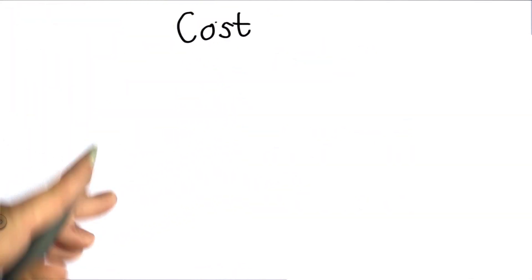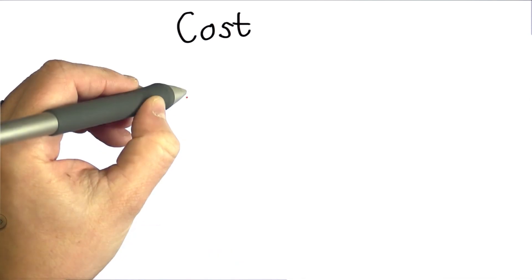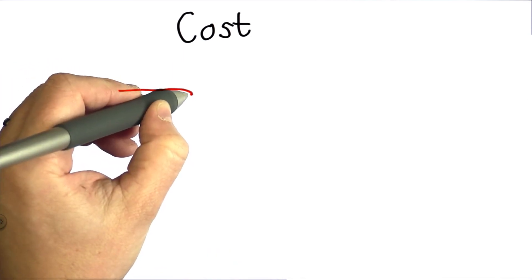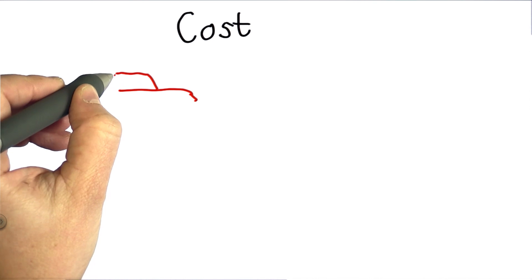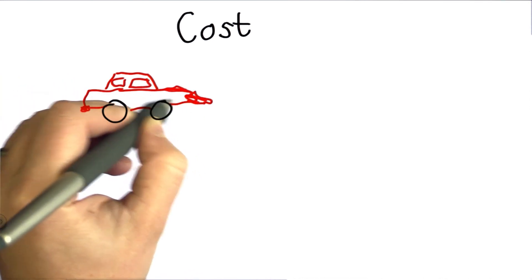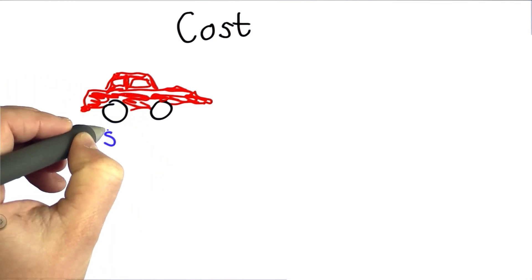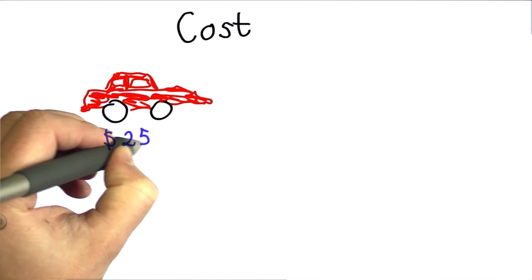So how should we think about cost? And the way computer scientists think about cost is quite different from how most people think about cost. So if you're normally thinking about cost, well, you've got a specific object. Let's say you've got a cool car. This is supposed to be a cool car. It doesn't quite look like a cool car.